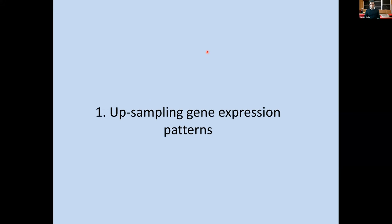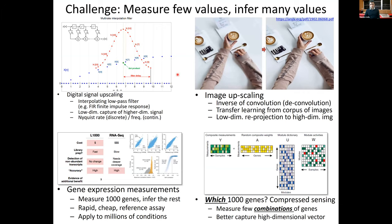Upsampling is not a new problem — it's been studied for decades in digital signal processing. If I have a signal sampled only every one second, I'm trying to infer the intermediate values. For a linear or constant signal, interpolation is easy — just take a weighted midpoint. It becomes more challenging when the function is non-linear, and that's where you need lower-dimensional representations to carry out this upscaling.